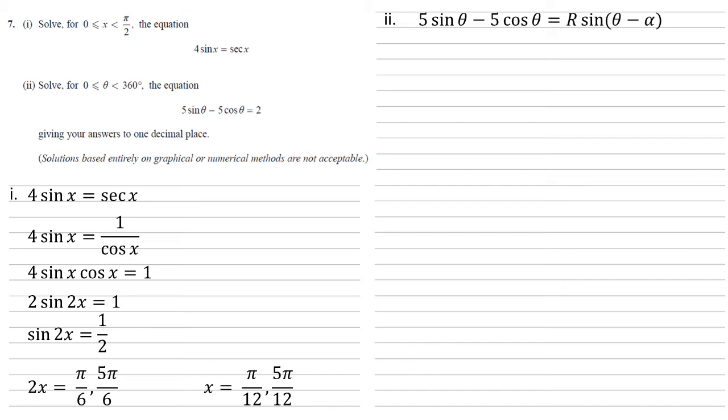Now for part 2, we want to solve the equation 5 sin theta minus 5 cos theta equals 2. And the best way to do this is to convert that left hand side into the form r sin theta minus alpha.